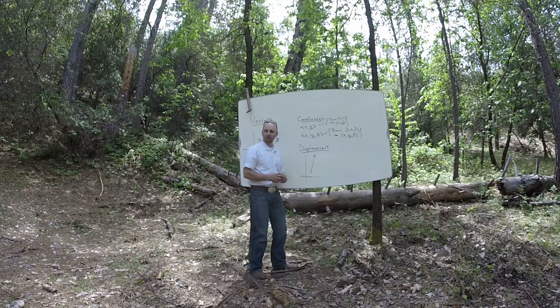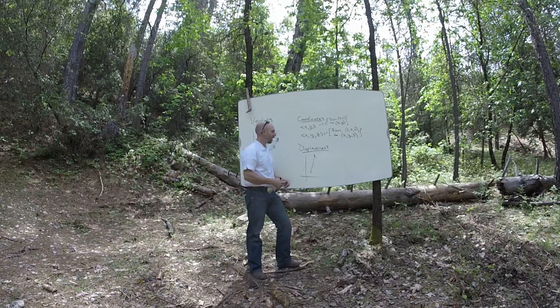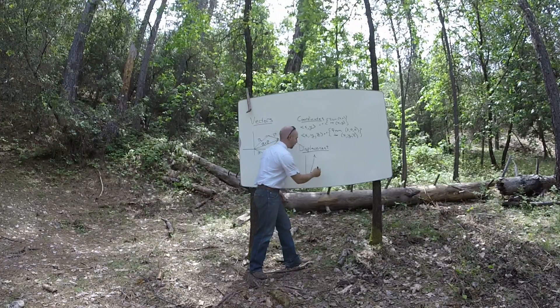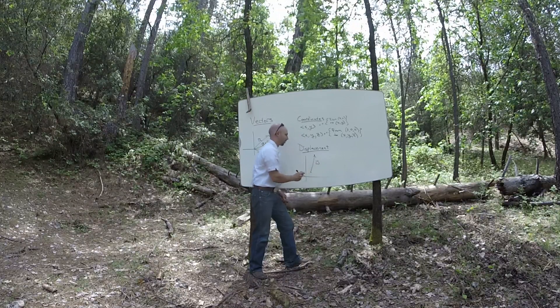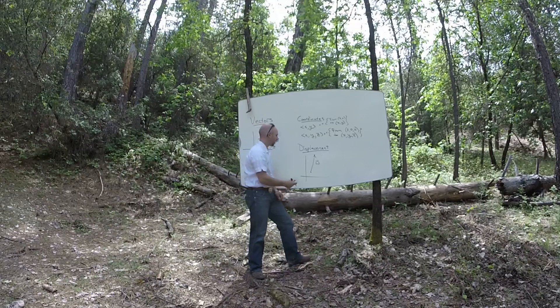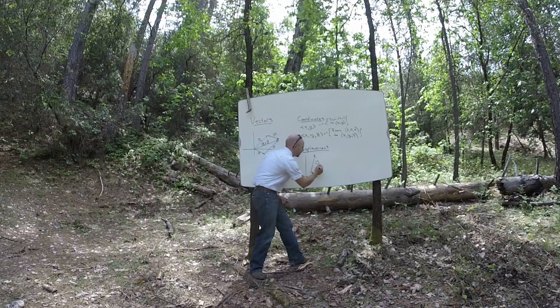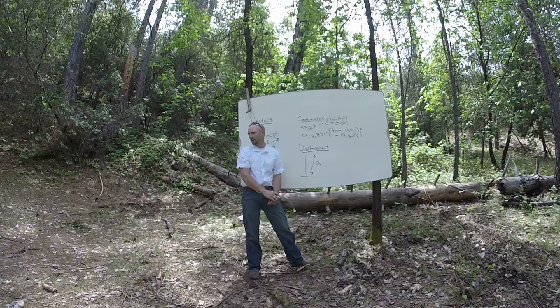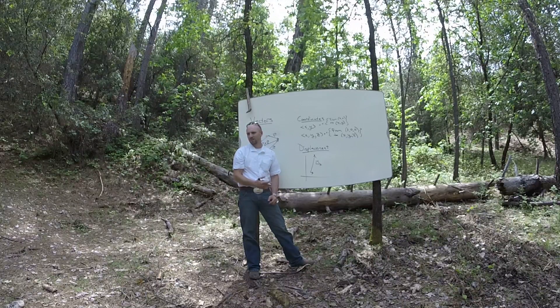So if I'm going to base a vector somewhere else, I'm going to write that vector's name. So like this one might be W. And I'm going to base it somewhere. So I'm going to base it at this point P. So I'm going to call it W based at P. Does that kind of make sense?